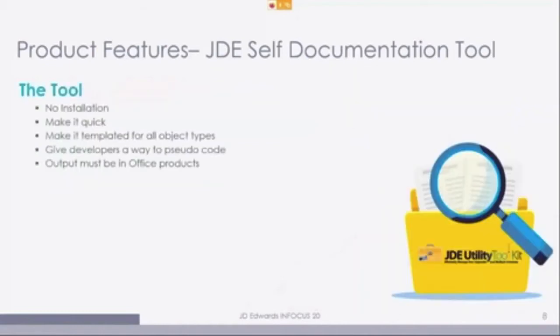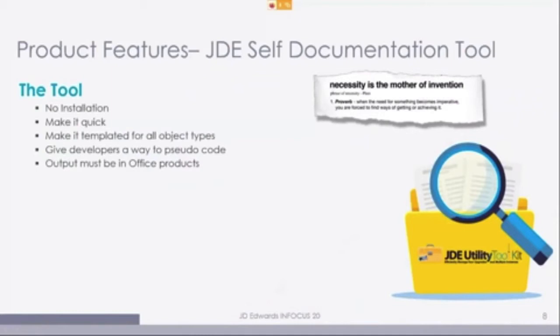The tool itself requires no installations — just an executable. Copy it on your system and run it. It runs quickly and produces templated output — all documents look similar. It gives developers a way to get pseudocode out, dumping event rules in a pseudocode-looking fashion. The output comes in Office product format, so pretty much everyone can open it. You can even open the DOCX formats in LibreOffice.